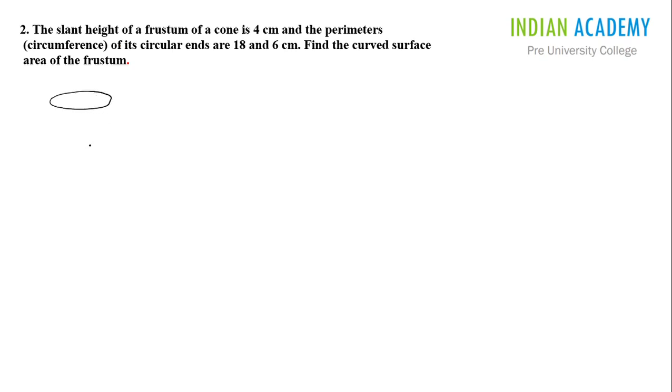Let me draw a frustum first. So that's my frustum. This frustum, if it is a closed frustum, then we have three surfaces. The first surface is the top circle, that's my first surface. The bottom surface is also a circle.